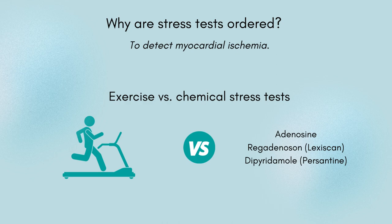Let's first discuss why a nuclear stress test is ordered. Cardiac stress tests are vital diagnostic tools for evaluating myocardial perfusion and function. They're typically used to investigate symptoms like chest pain and dyspnea and assess the extent of coronary artery disease. A stress test can detect myocardial ischemia and should be used in stable patients without a diagnosis of unstable angina or acute coronary syndrome. Exercise testing is preferable, but sometimes patients cannot exercise due to physical limitations, so a chemical stress test may be ordered instead.